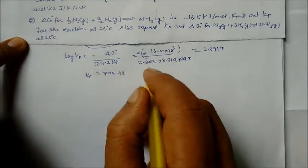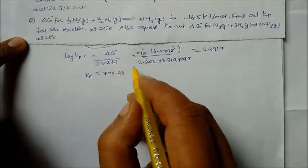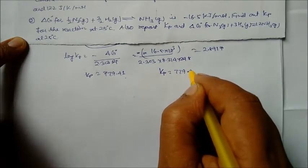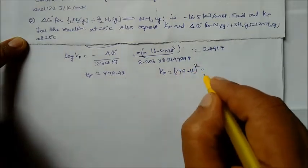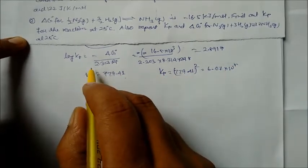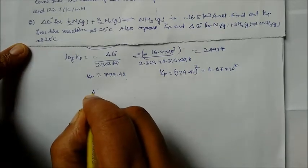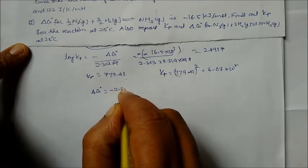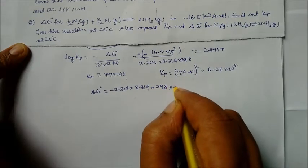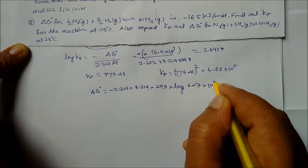Now for the doubled reaction N₂ + 3H₂ ⇌ 2NH₃, Kp = (779.41)² = 6.07 × 10⁵. We can now calculate ΔG° = −2.303 × 8.314 × 298 × log(6.07 × 10⁵).